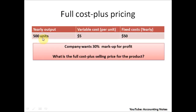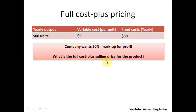We have a company that plans to have a yearly output of 500 units at a variable cost of $5 per unit and a fixed cost of $50. The company wants a 30% markup for profit, and we need to find the full cost plus selling price for the product.